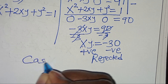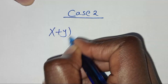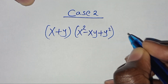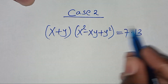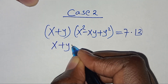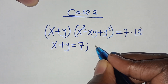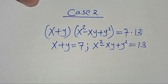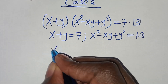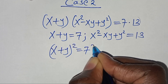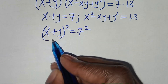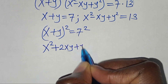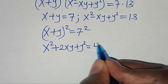In Case 2, we have (x + y)(x squared minus xy plus y squared) equals 7 times 13, giving x plus y equals 7 and x squared minus xy plus y squared equals 13. Squaring both sides of x plus y equals 7 gives x squared plus 2xy plus y squared equals 49.